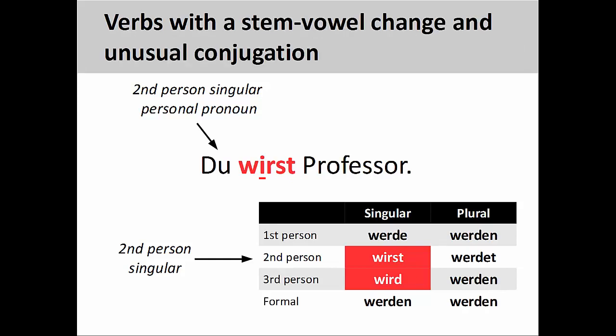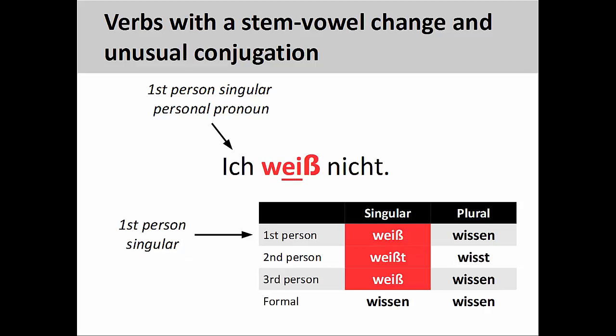Some verbs have a stem-vowel change in addition to an unusual conjugation pattern. The verb werden, meaning 'to become,' has a stem-vowel that changes from e to i and unusual verb endings in the second- and third-person singular — for example, 'du wirst Professor' (you become a professor). The verb wissen, meaning 'to know,' has a stem-vowel change in all singular forms and unusual verb endings in the first- and third-person singular — for example, 'ich weiß nicht' (I don't know). Modal verbs also have stem-vowel changes and unusual verb endings, but that is a topic for another presentation.